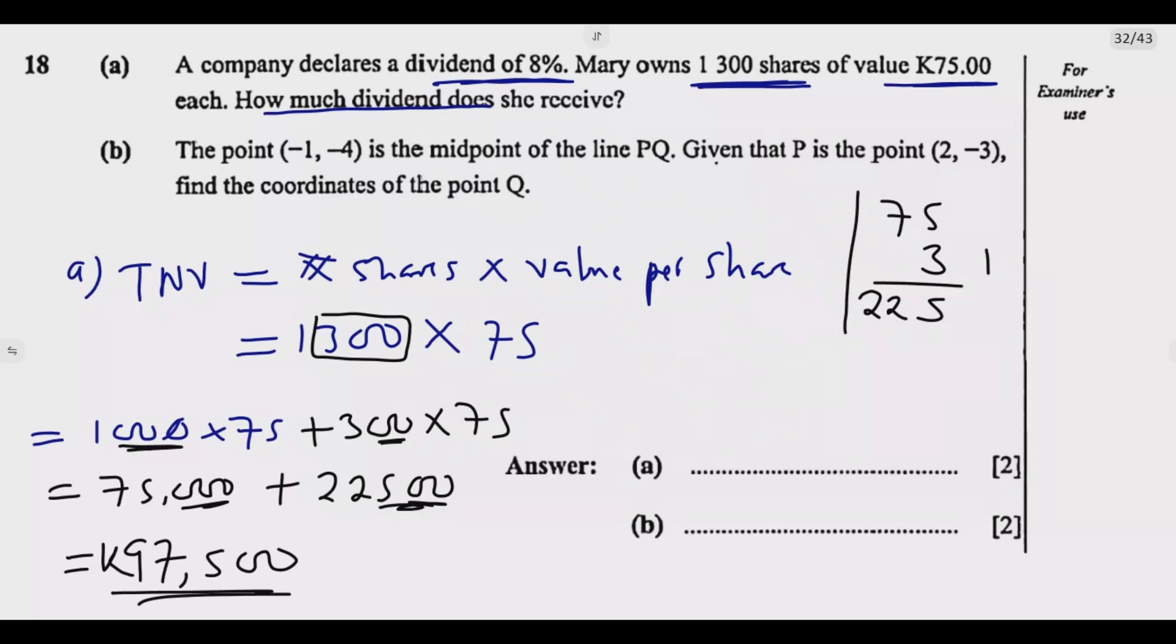When I add this, 75 plus 22 is 97. 97,500. That's the total nominal value. Then after I find this total nominal value, the next thing is to find 8% of this 97,500.